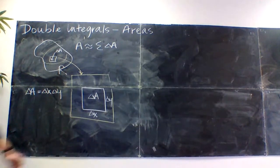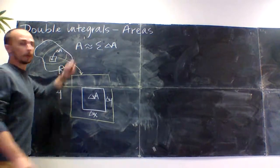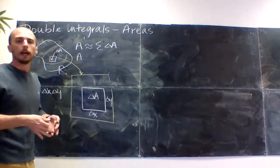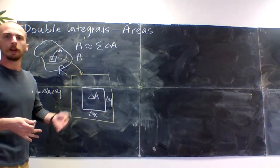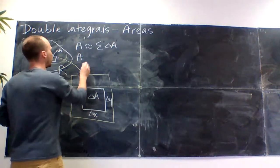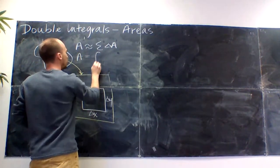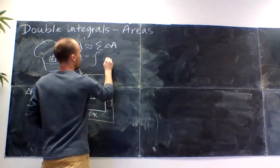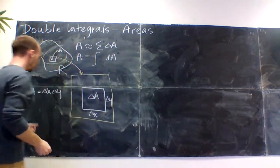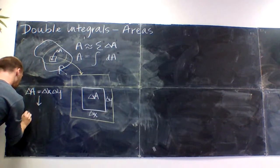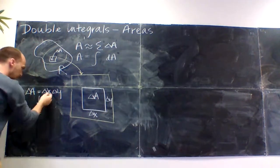The value of delta A is equal to delta X times delta Y. Now if I want to actually get an exact value here, I'm going to let this chopping get really fine, let the number of pieces of area go towards infinity. Area is going to become equal to the integral of delta A becomes dA. In the limiting case, dA is going to be dX dY.